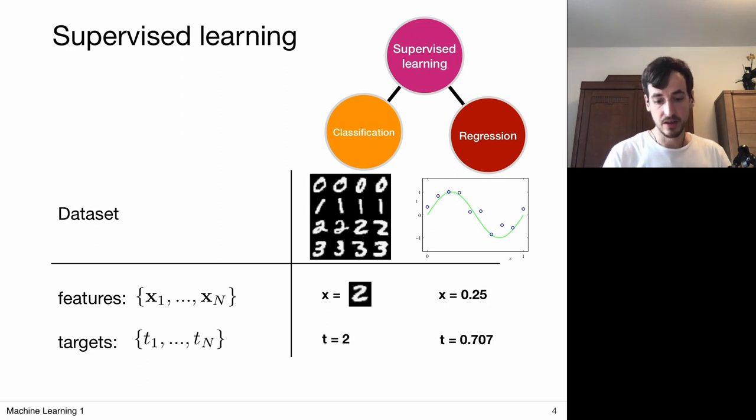Again, supervised learning methods always come, the data always comes in pairs of input and a corresponding target. In the case of the MNIST digit classification case, we have an input image and a corresponding digit. So in this case, this represents a 2, so the target is this digit class 2.